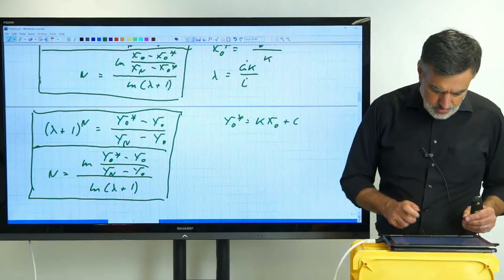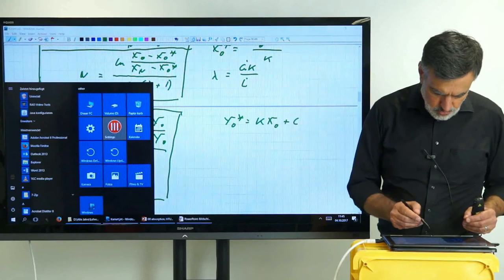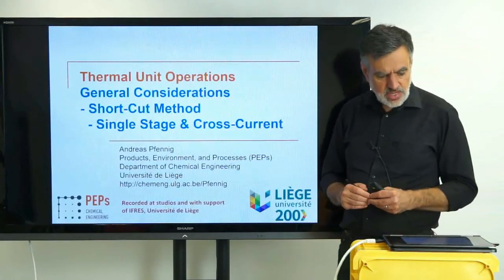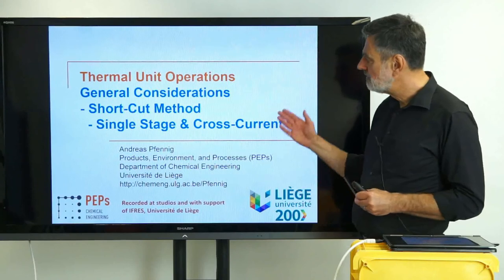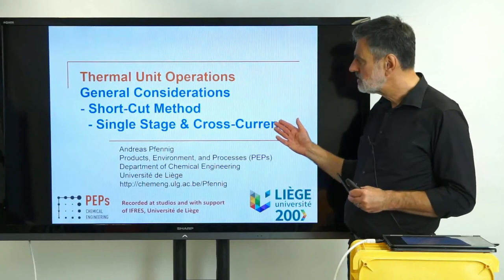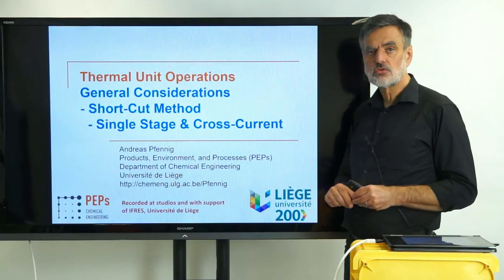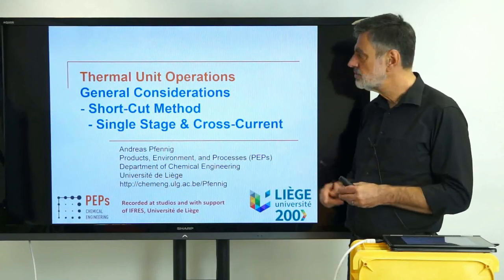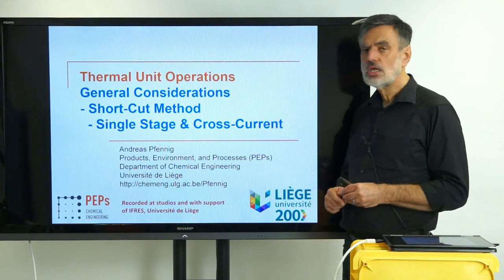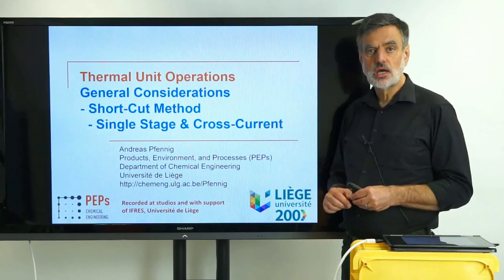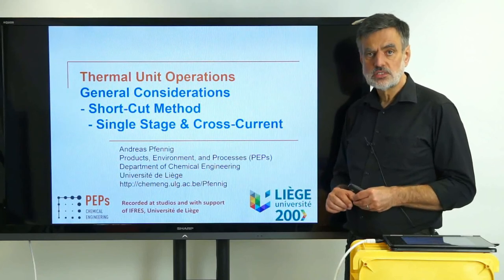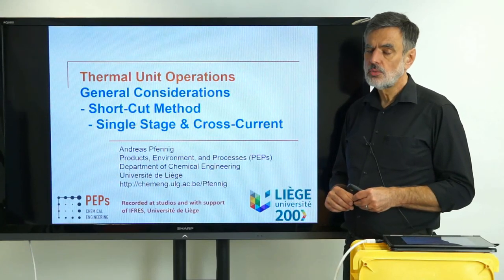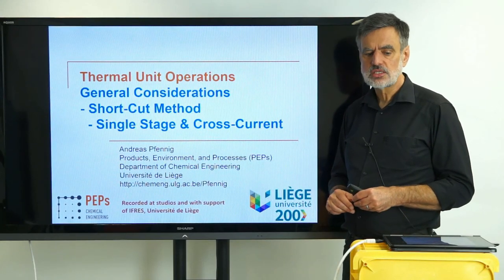With these results we are able to describe and design the cross-current multistage process — determining the number of theoretical stages required for a given separation task defined by inlet flow rates, compositions, and outlet compositions. This concludes the derivation of shortcut methods for the single stage and the cross-current process. The take-home message will be introduced after the next video, which covers the counter-current multi-stage process. Thank you and see you in the next video.